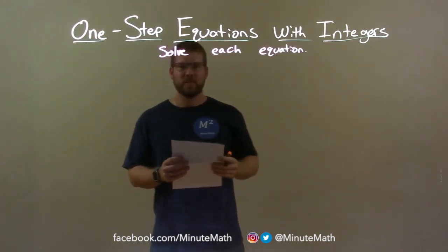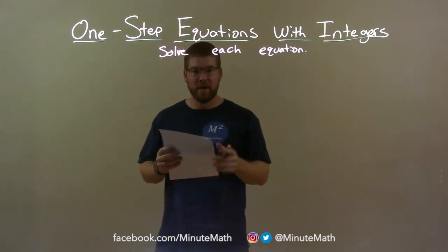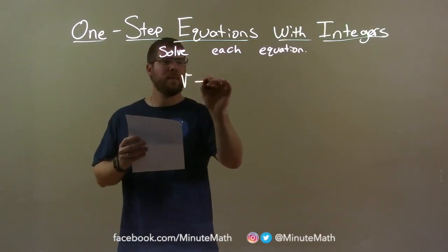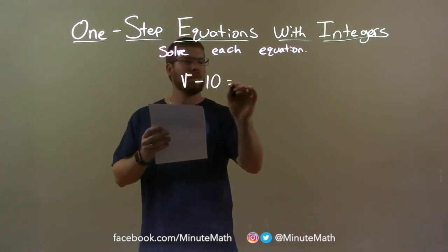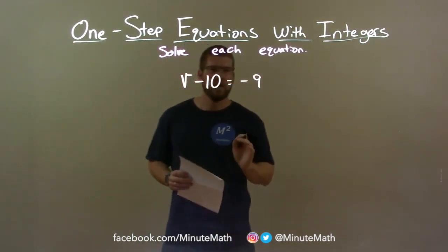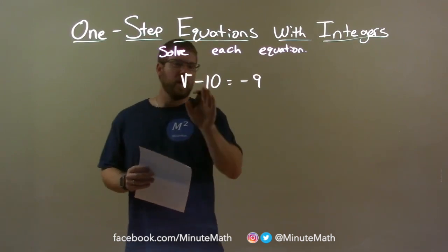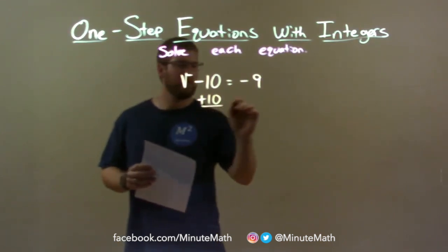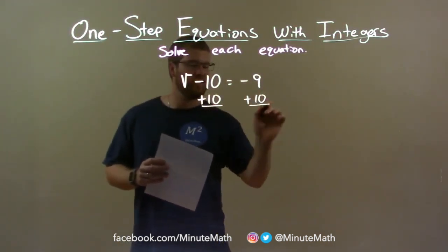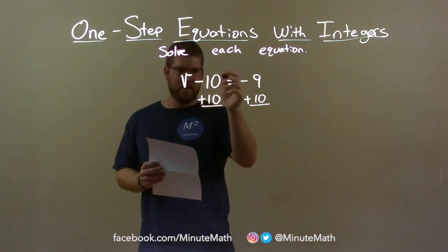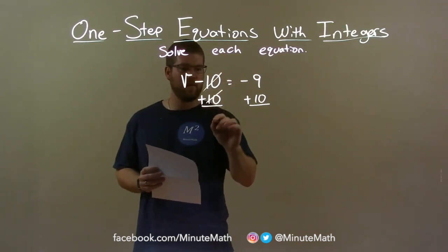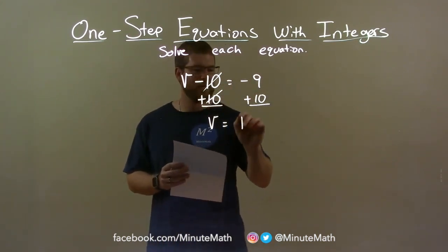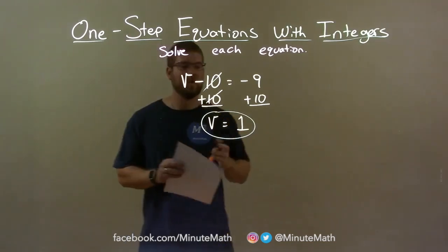Solve each equation. If I was given this equation: v minus 10 equals negative 9. The first thing I want to do is get v by itself. We have a subtract 10 right there, so I want to use the opposite operation — addition. I'm going to add 10 to both sides. v comes down, minus 10 plus 10 cancels out, leaving v by itself, and negative 9 plus 10 is positive 1. So my final answer is v equals 1.